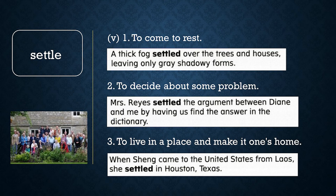Now let's review word meaning. Choose A or B: when you settle an argument between two people, you A make them start arguing, or B end the argument. If you said B, you are correct. When something is settled, it is decided or ended.